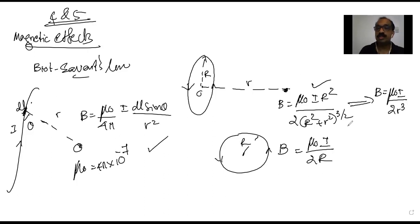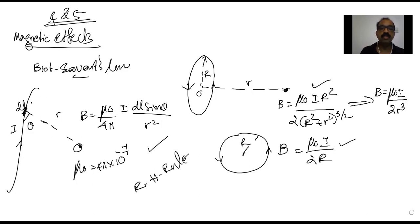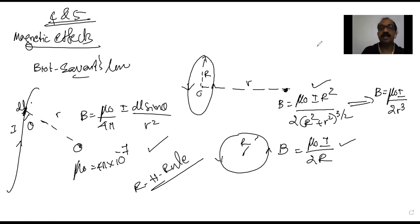The right-hand thumb rule is used to find the direction of the magnetic field at a point due to a current-carrying wire. The magnetic effects chapter has four segments: first is Biot-Savart law and its applications, the next is Ampere's Circuital Law.